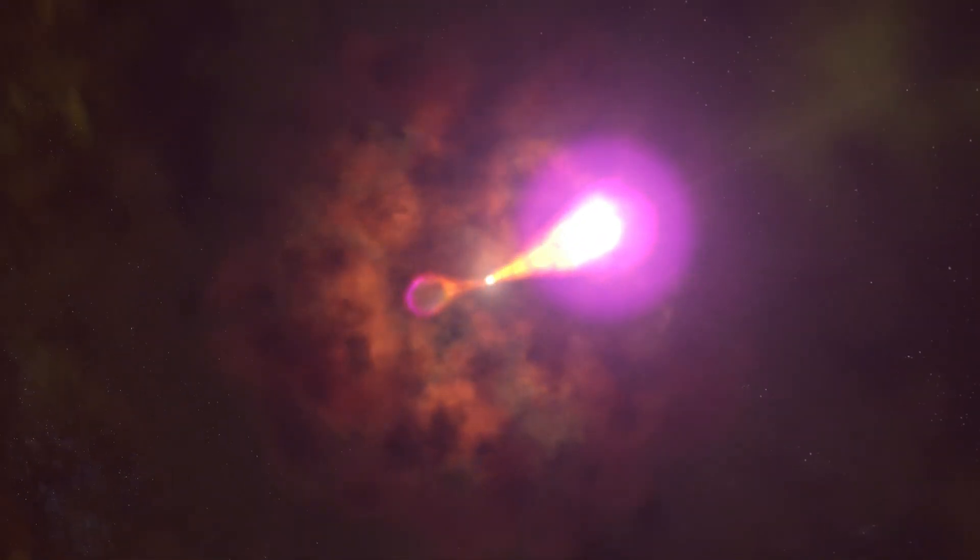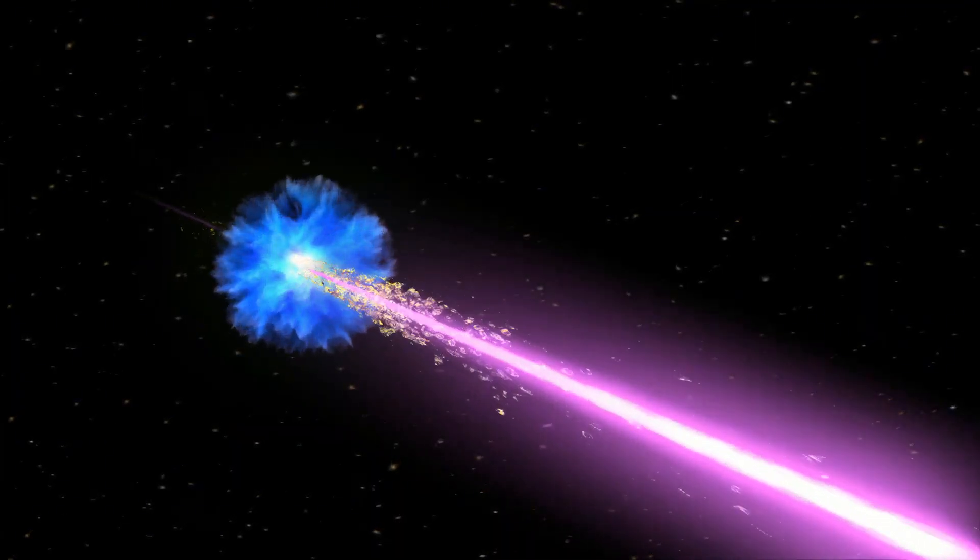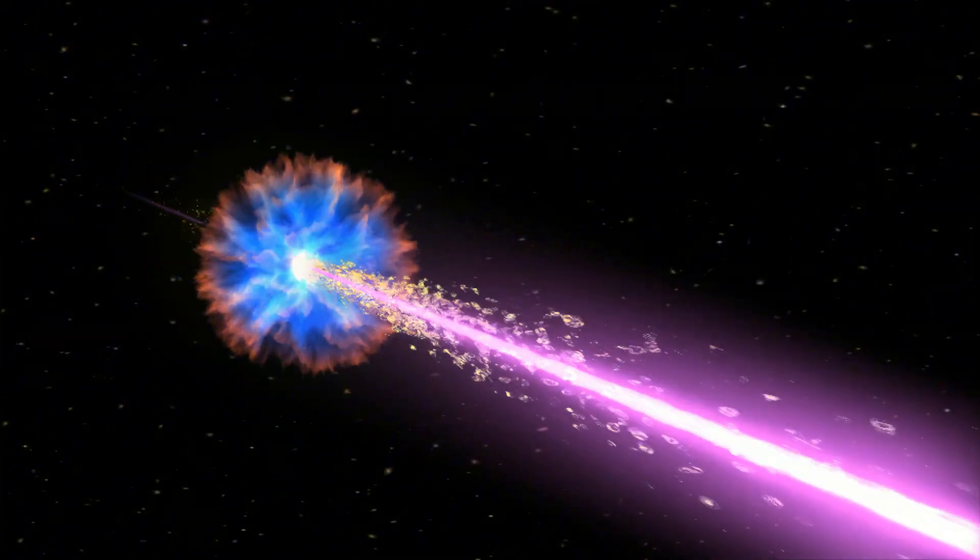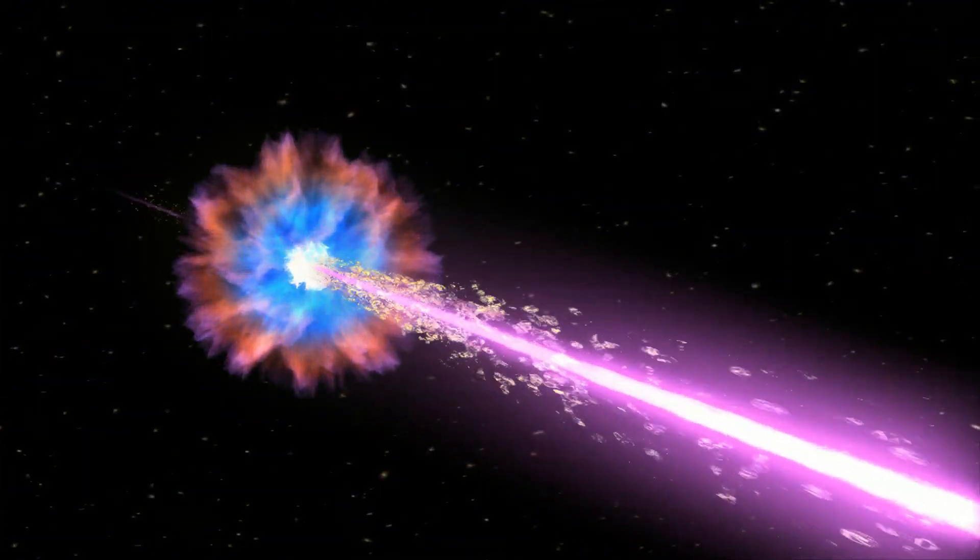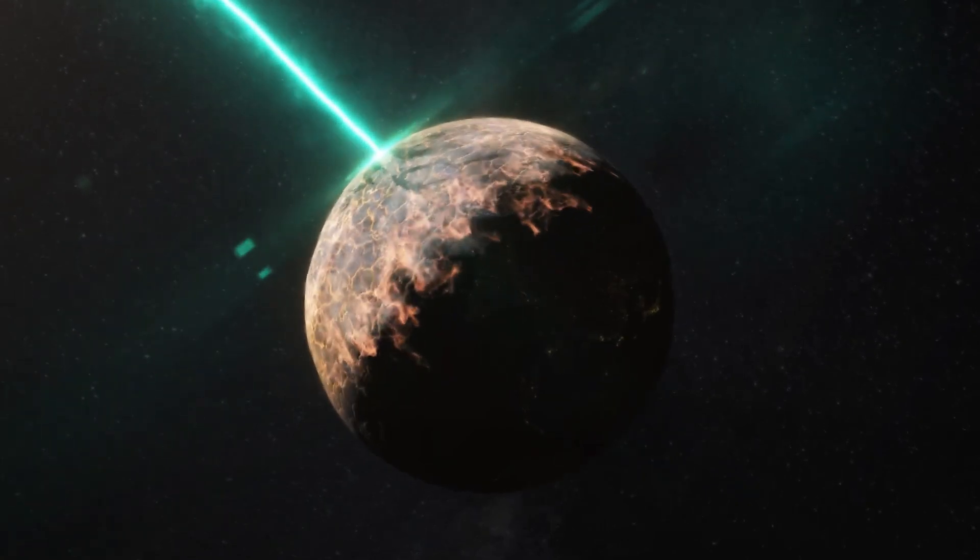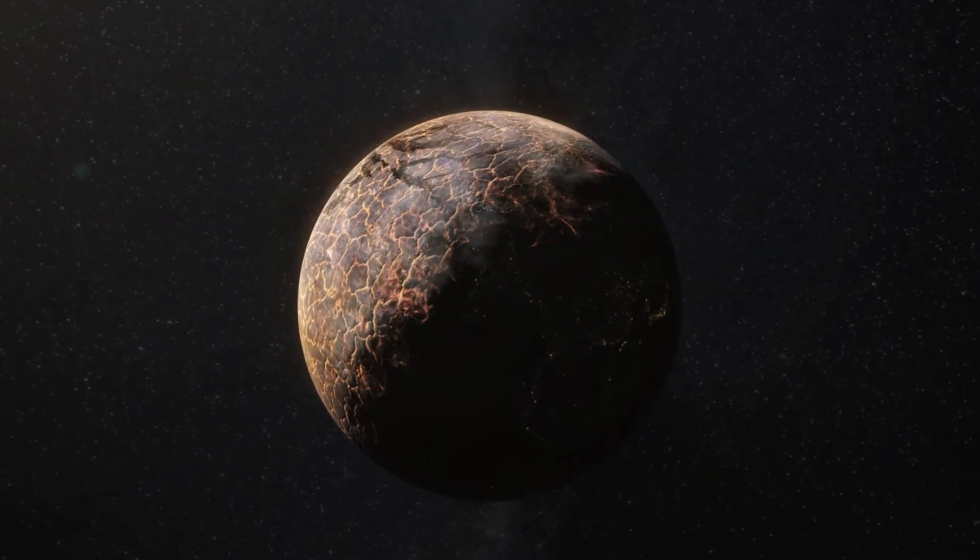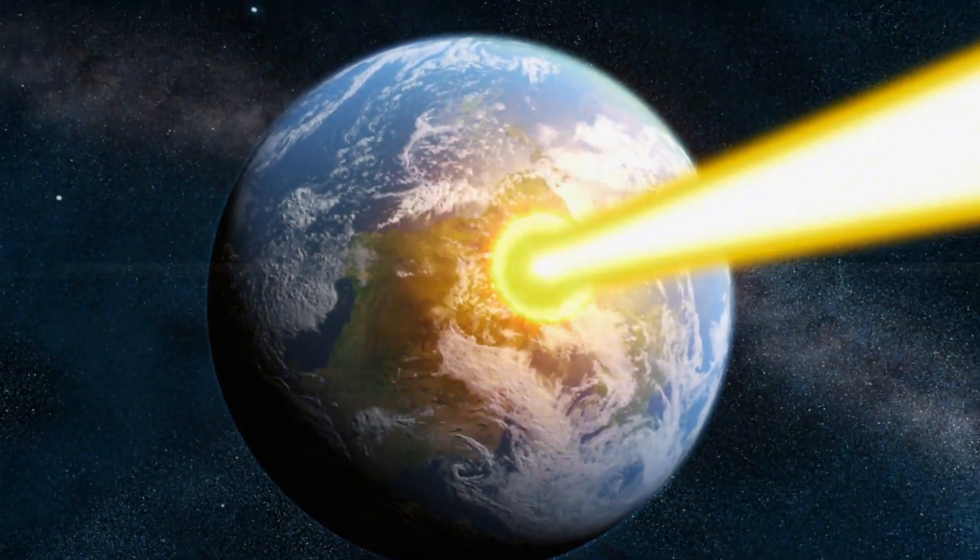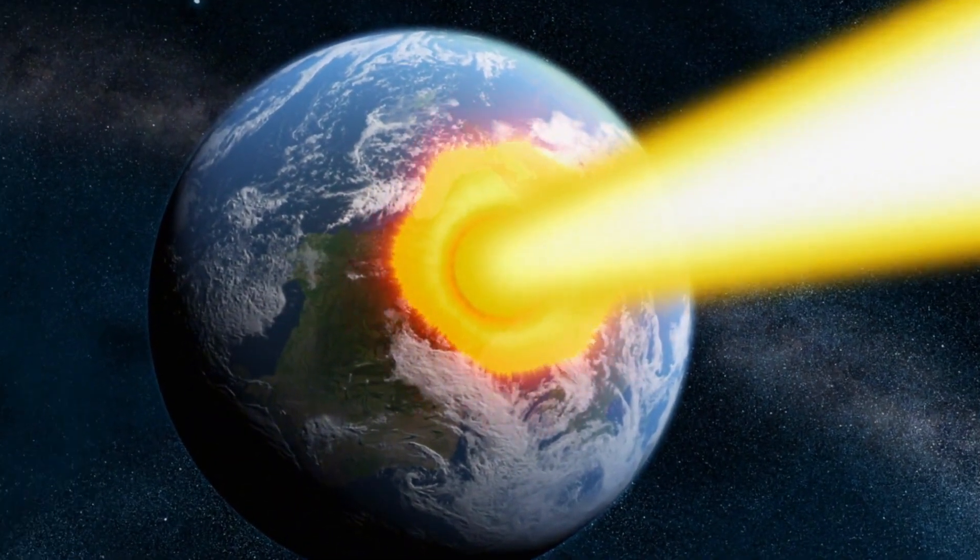That's a gamma-ray burst. These high energy beams shoot out from the poles of the collapsing star, travelling through the universe at the speed of light. If one of these beams were pointed directly at Earth, we'd be in serious trouble. First, our atmosphere would get zapped, wiping out the ozone layer.